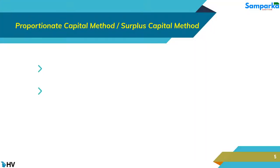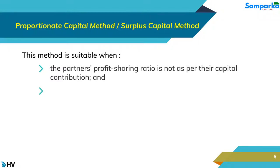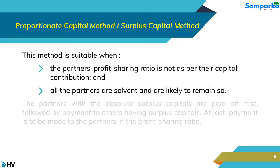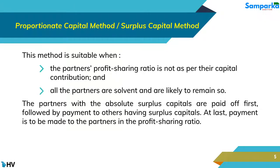The Proportionate Capital Method is suitable when the partners' profit-sharing ratio is not as per their capital contribution, and all the partners are solvent and are likely to remain so. The partners with the absolute surplus capitals are paid off first, followed by payment to others having surplus capitals. At last, payment is to be made to the partners in the profit-sharing ratio.